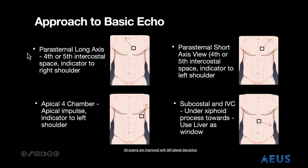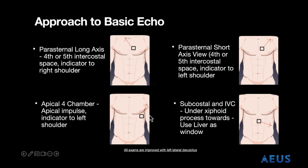Let's talk about our different images. We will start with the parasternal long axis view. The ultrasound probe will be placed within the 4th or 5th intercostal space and the indicator will be towards the right shoulder. For the parasternal short axis view, we will also be in the 4th or 5th intercostal space but the indicator to the left shoulder. For your apical four chamber, you would be right over the patient's PMI or apical impulse with the indicator towards the left axilla or shoulder. And for the subcostal view, we will be using our liver as the window with the indicator towards the left hip.